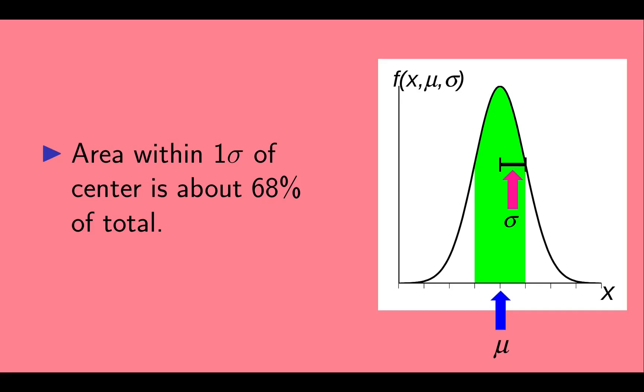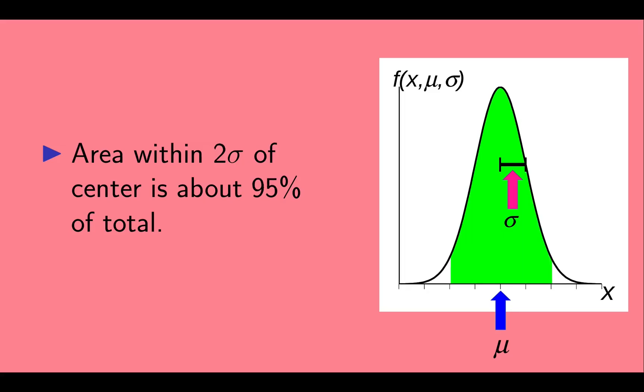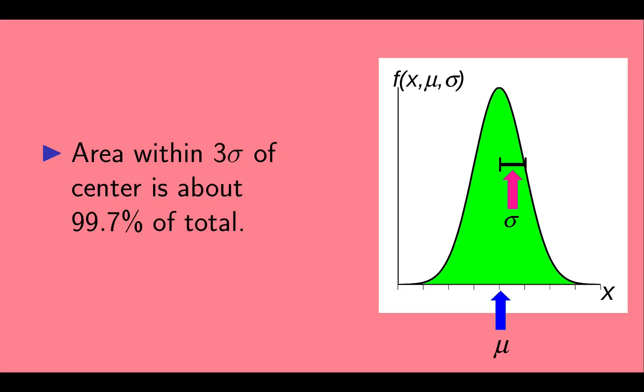The area under a Gaussian curve within 1 sigma of the peak is about 68% of the total. The area within 2 sigma is about 95% of the total, and the area within 3 sigma is about 99.7% of the total.